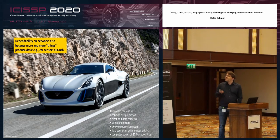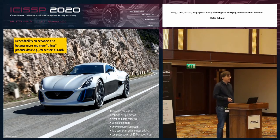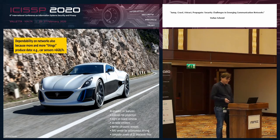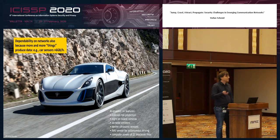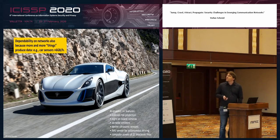I showed this yesterday — this is an AI-enabled car. It has collision risk prediction, eight on-board cameras, six radar emitters, 12 ultrasonic sensors, and computer power of up to like 12 MacBook Pros. So this car alone generates something like six gigabytes per hour of data.